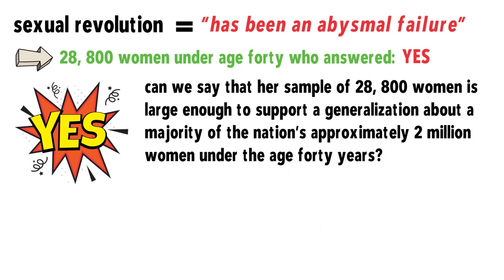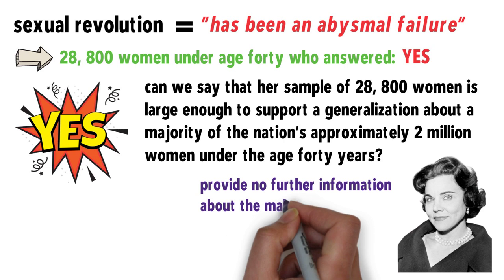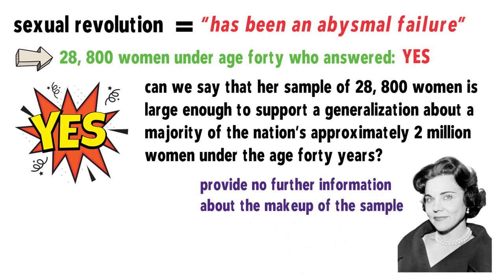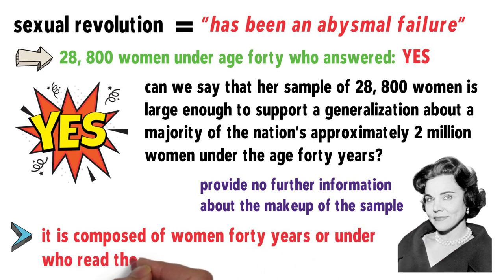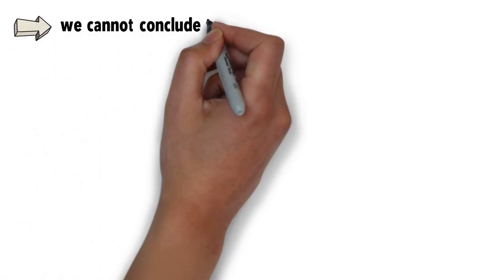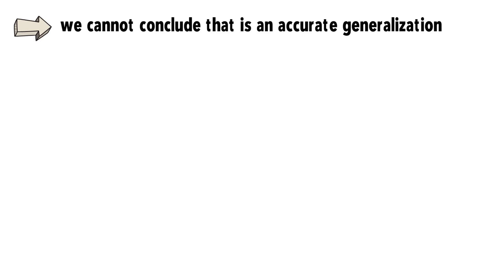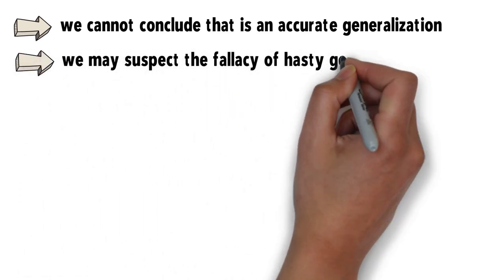Although it is a significant sample, we may wonder whether it is indeed representative of the nation's women under 40. Landers provides no further information about the makeup of the sample. We know only that it is composed of women 40 years or under who read this survey and responded. Lacking such information, we cannot conclude that it is an accurate generalization, and we may suspect the fallacy of hasty generalization.